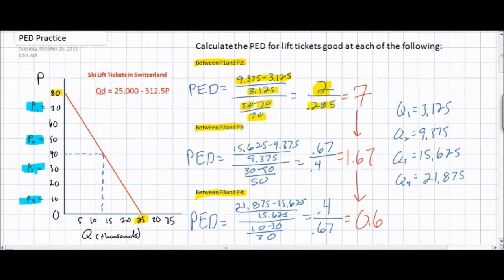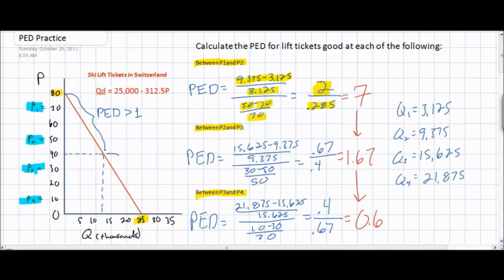Looking back at our original demand curve, we can conclude that anywhere between 80 francs and approximately 40 francs, demand for ski lift tickets is elastic, because as the price fell from 80 to 40 francs, total revenues of ski producers actually increased, indicating consumers are relatively responsive to price changes. Below 40 francs, further decreases in price led to decreases in total revenue, so PED must be less than one. Somewhere between 50 and 30 francs — around 40 francs — total revenue did not change when price changed, so PED must be approximately equal to one.